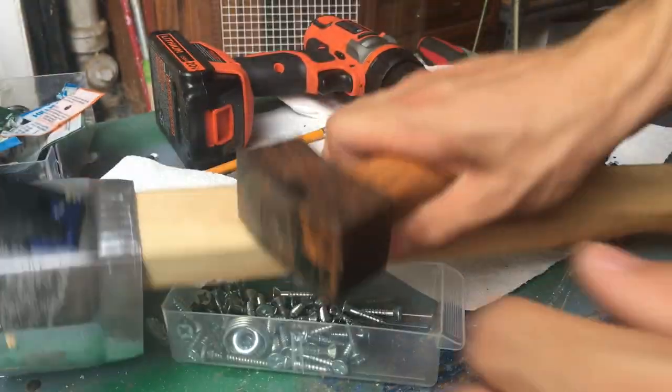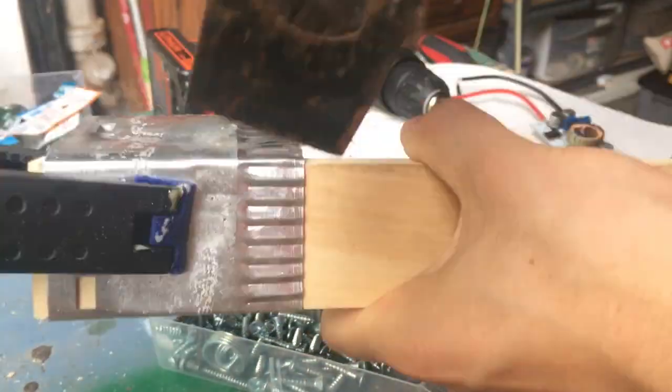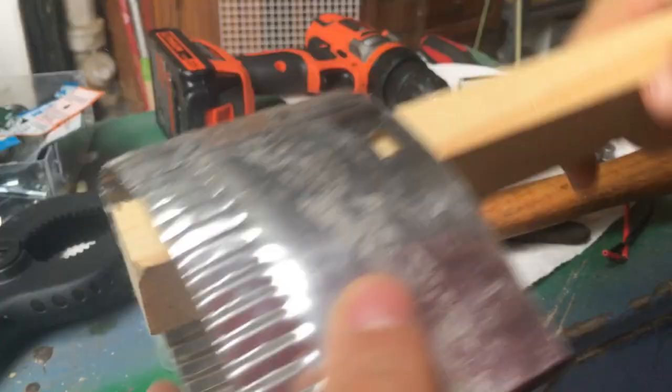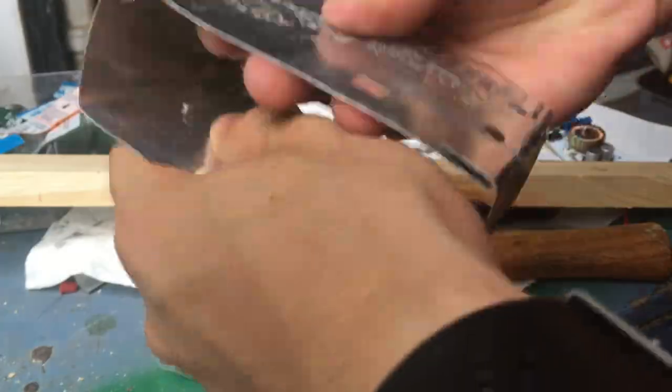I used an old piece of ductwork to make the enclosure for the power supply. I don't know why, but ductwork ended up somehow becoming a bit of a motif in this project. I think it's because it's just a good available source of sheet metal that you don't have to buy in bulk.